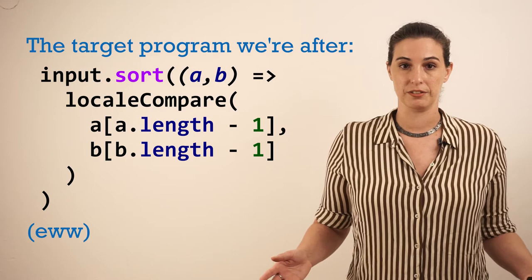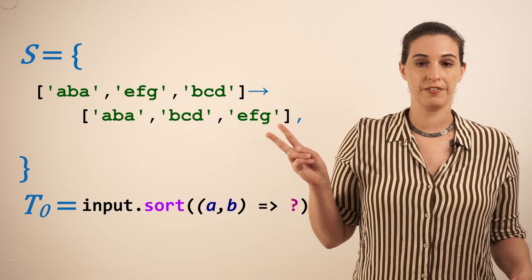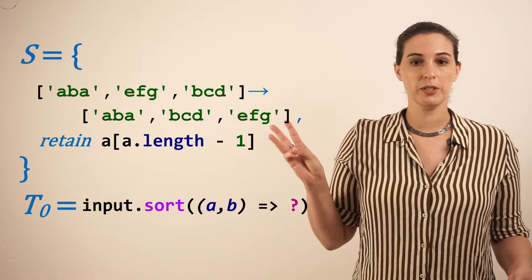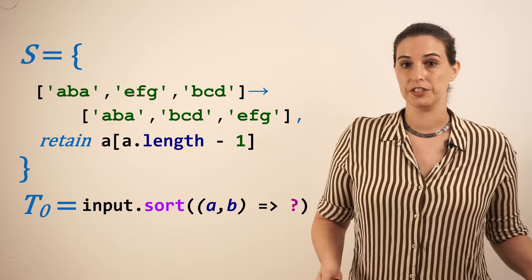So let's say we want to use a synthesizer to sort an array of strings by their last character. The specification we get from the user has the following: an example of the list before and after sorting, a sketch that specifies that we're synthesizing the body of the compare function inside of sort, which takes a and b as its arguments, and the requirement to retain a at a.length minus 1, which gets us the last character of a.